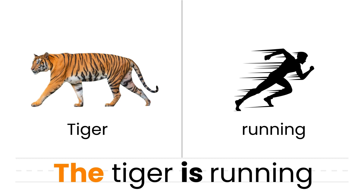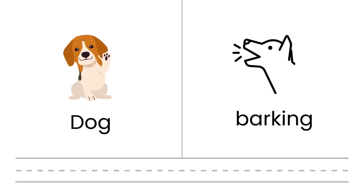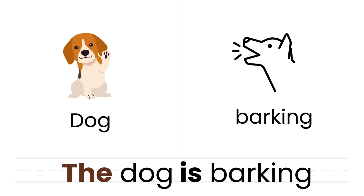The tiger is running. Can you make sentences using the words below? The dog is running.